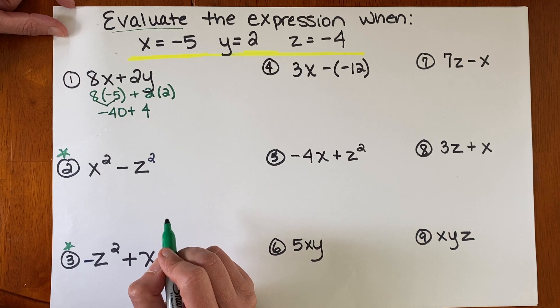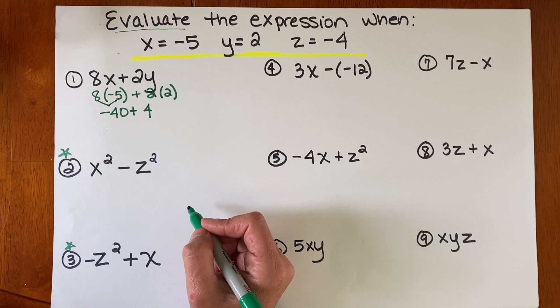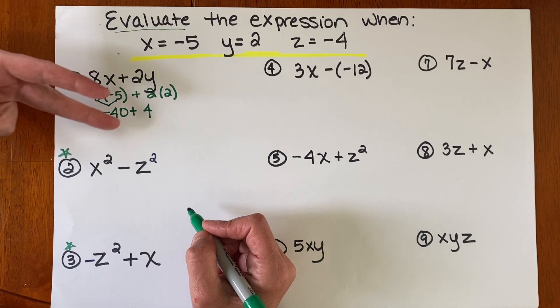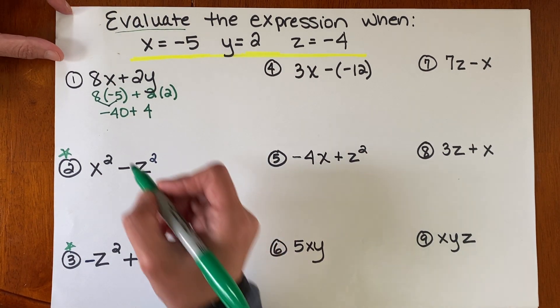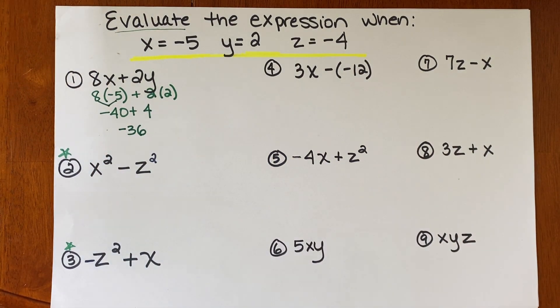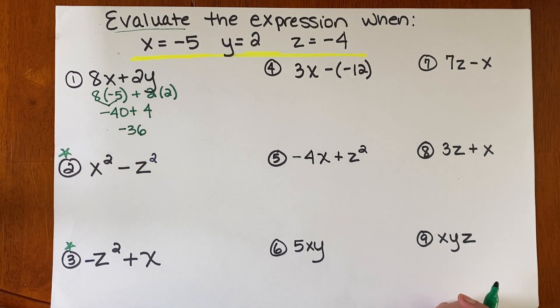So 8 times negative 5 is negative 40, plus 2 times 2 is 4. This is my sneaky way of doing evaluations, multiplying integers, order of operations, and adding integers. I'm really tying a lot of things that we learned all year. Here's where kids get tricked. The numbers look small, and kids just think it's easy because the numbers are small. They fly through it. They get a lot wrong. So careful.